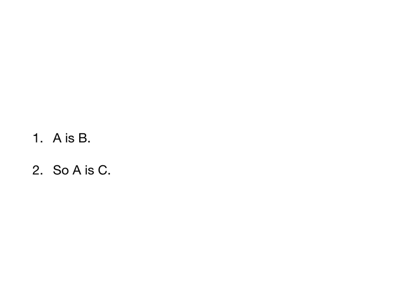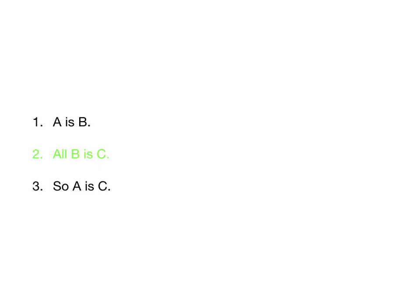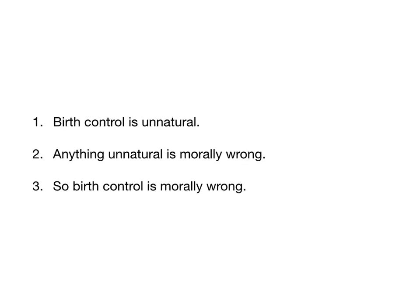If we were going to use these all/some/whatever statements we've been talking about, what would fill this in and make it valid? Well, all B is C. A is unnatural, all unnatural things are immoral, so birth control — being an unnatural thing — is immoral. Birth control is unnatural; anything unnatural is morally wrong — that's our missing premise — so birth control is morally wrong.